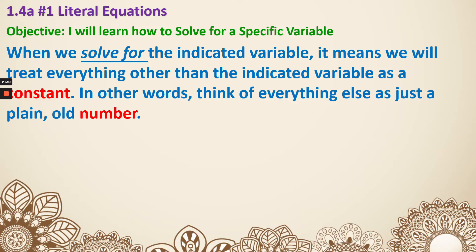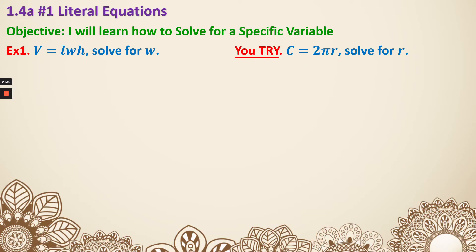Now let's look at some examples. Number one, solve for w. w is right here. And we do need to know that means we need to get rid of the l and the h. Before we get rid of them, these three things are being multiplied, which means if we want to get rid of the l and the h, we are going to divide by l and h on both sides.